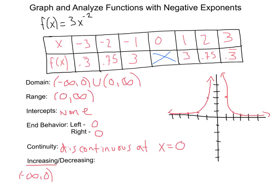Let's take a look at where we are decreasing. On the other side here we are moving down as we go to the right. We are going downwards. So we are decreasing from zero to positive infinity.